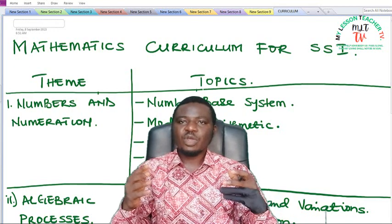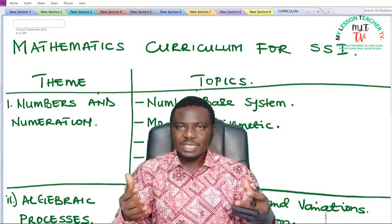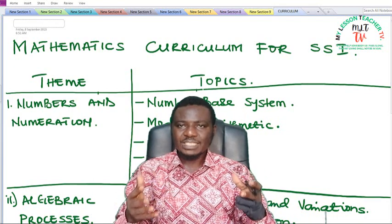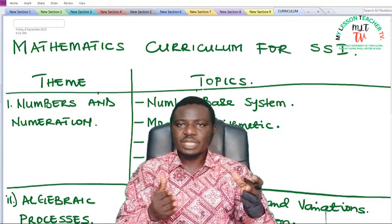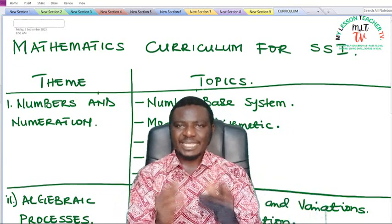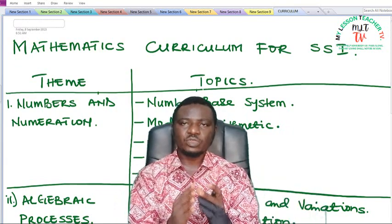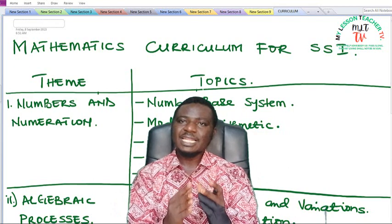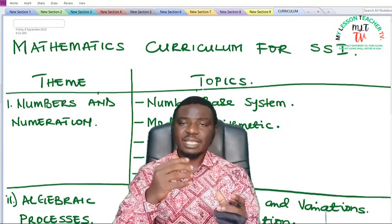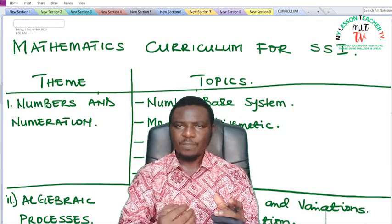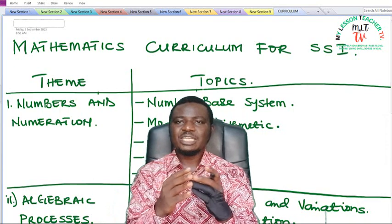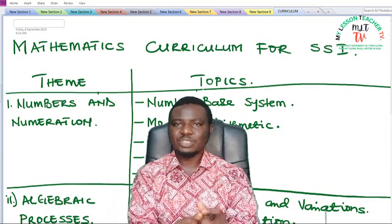So I'm going to give you a rundown of the topics in senior secondary school one which you should expect as a student entering SS1. The themes in SS1 are a little different from that of junior secondary school. The themes are also five in number — two themes from the junior secondary school have been merged into one and a new one has been introduced.